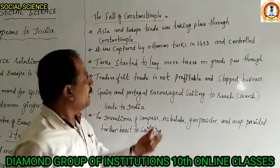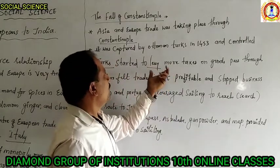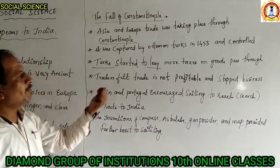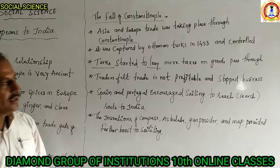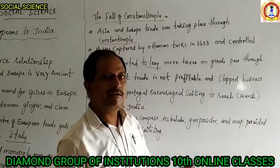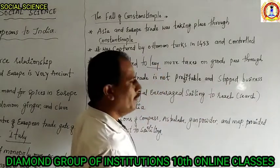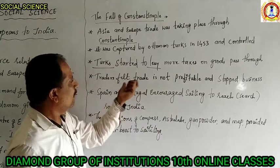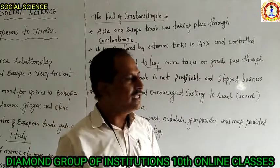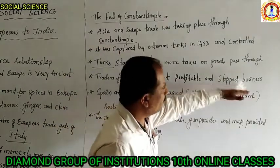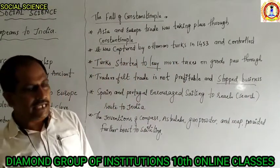Due to the levy of heavy taxes, Italy was getting no profit from selling these goods in European countries. The traders belonging to Italy could not find any profit from selling goods, so they stopped their business from Constantinople.